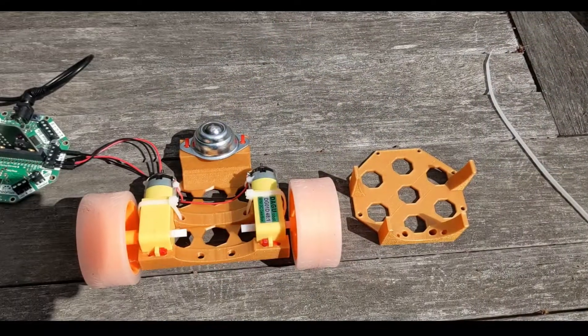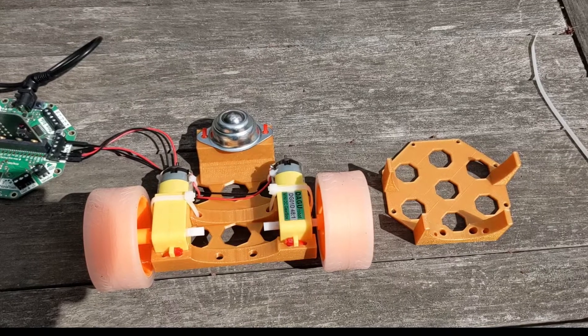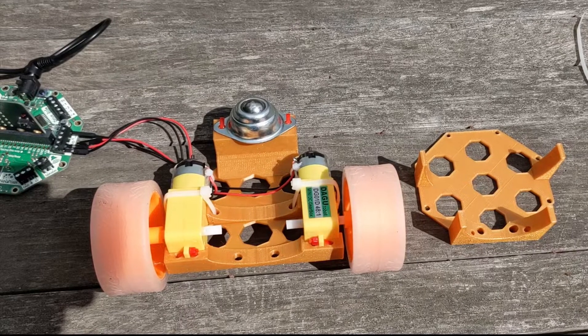The concept here is that you print the two pieces upside down and you zip tie your motors, a caster wheel if you're using it, to the bottom, and then you zip tie the two pieces together.